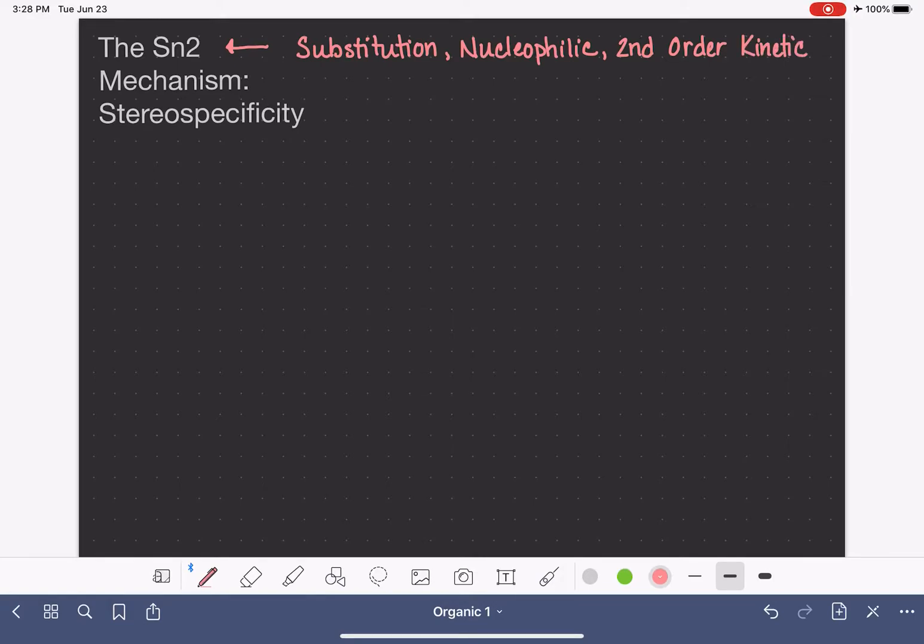In general chemistry, you learned about zero, first, and second-order kinetics. A second-order reaction would have a rate law that looked something like this: rate equals the rate constant K times the concentration of the two reactants A and B. To say the reaction has second-order kinetics is just another way of saying that the rate of the reaction depends on the concentration of two different substances.